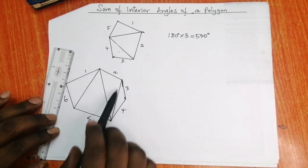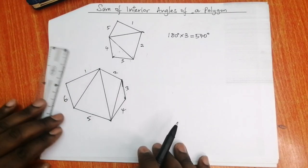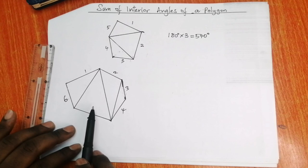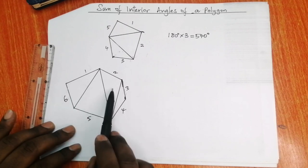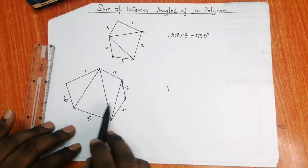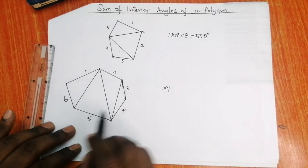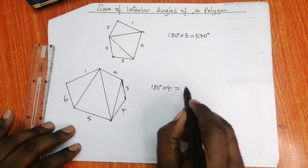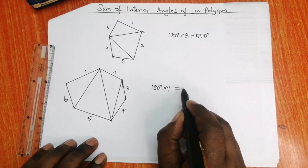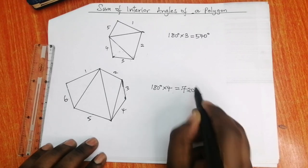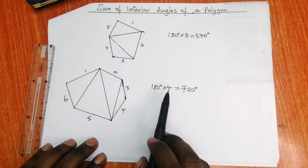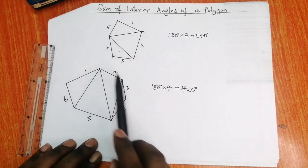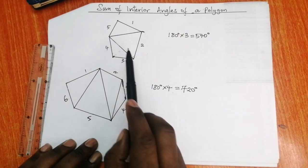We have a six-sided polygon — a hexagon. You can draw the dividing lines here, provided the triangles do not overlap or the lines do not intersect. We get one, two, three, four triangles. Each triangle has interior angles adding up to 180 degrees, so 180 degrees times 4 is 720 degrees.